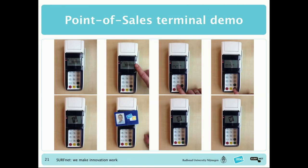We have another cool demo. Unfortunately they wouldn't let me bring it to the U.S. because they were scared it might get damaged. We've implemented this technology in a standard mobile point-of-sale terminal — the kind seen in restaurants with a GSM connection for payments. The company that produces these integrated support for the IRMA technology in the device, so at a merchant I can prove with my card that I'm over 18, or a citizen of the Netherlands, and then proceed to pay with the same device.